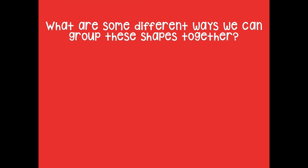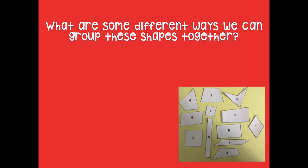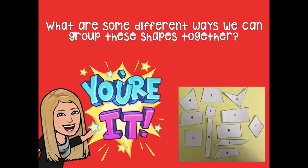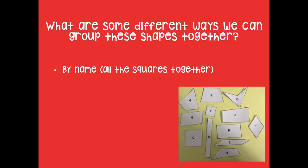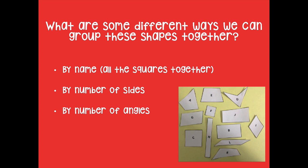What are some different ways we can group these shapes? You have them from your lesson template. Pause the video and think about ways you can group these shapes, then click play when you're ready. Some ways include: by name — you could put all the squares together, all the trapezoids, all the rectangles. Maybe by the number of sides, or by the number of angles, where the corners are where two sides meet together.